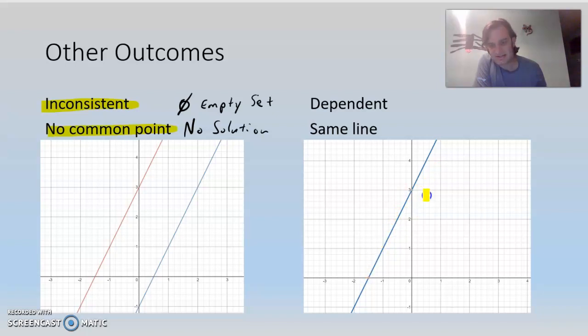So basically, this is one line on top of the other line, so they're the same line. So every point on the line is a solution to the system. So it has infinite solutions, and we call this dependent, and we'll explain that in a second.